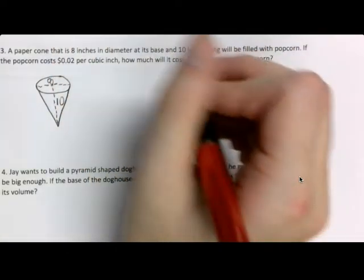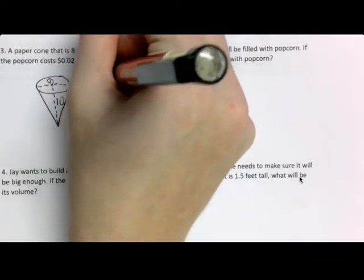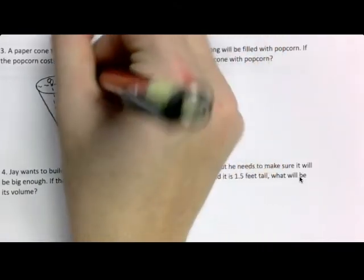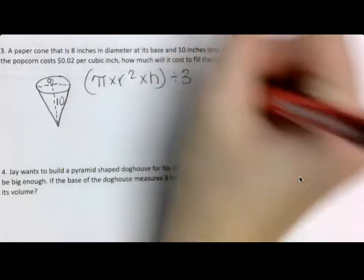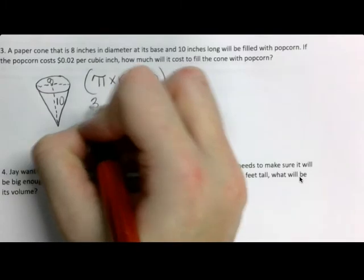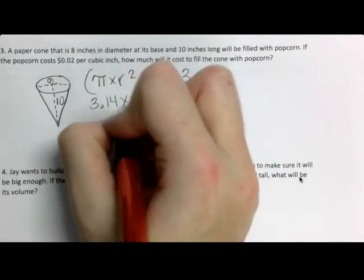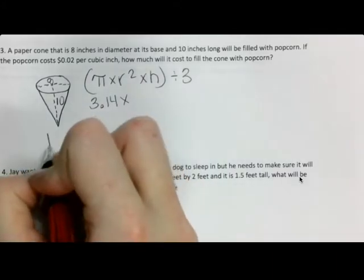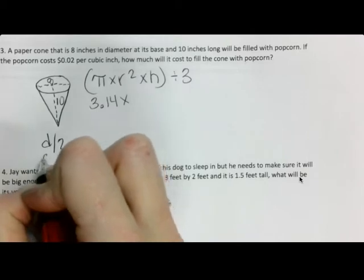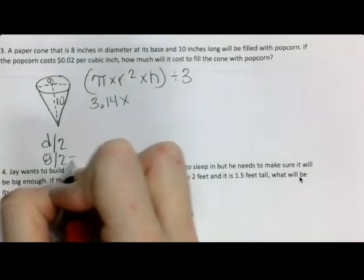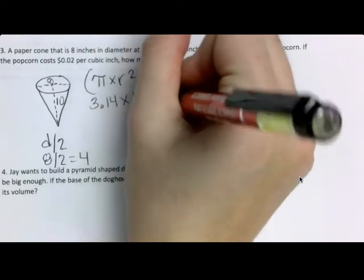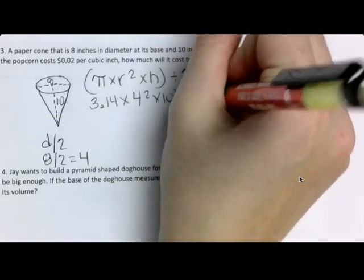So, let's start with our formula. We have π R squared H divided by 3. Well, 3.14 is the easy part. Is 8 my radius, my R, or my diameter, my D? It's my diameter. So, I need to take my diameter and divide it by 2. So, what is 8 divided by 2? 4. So, times 4 squared times my height of 10, all divided by 3.